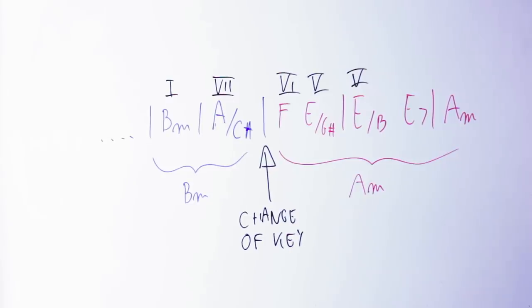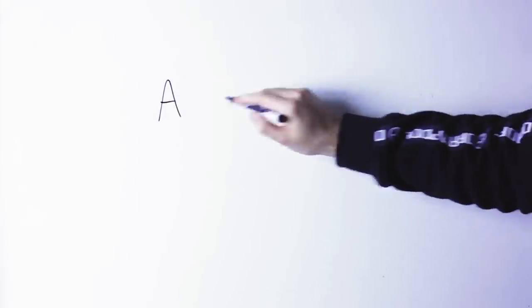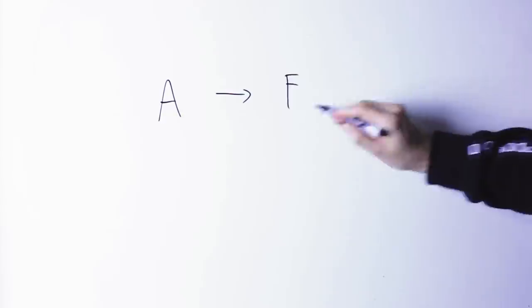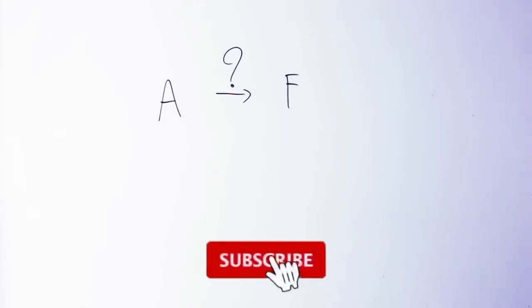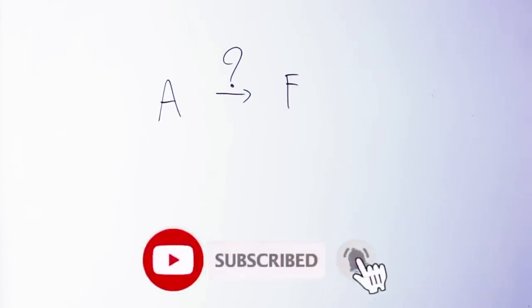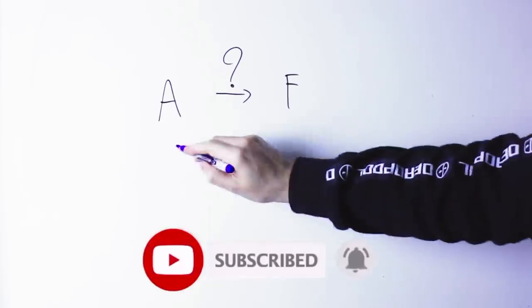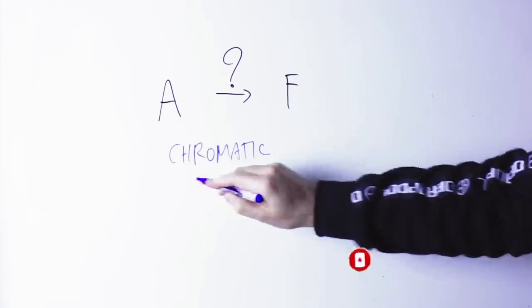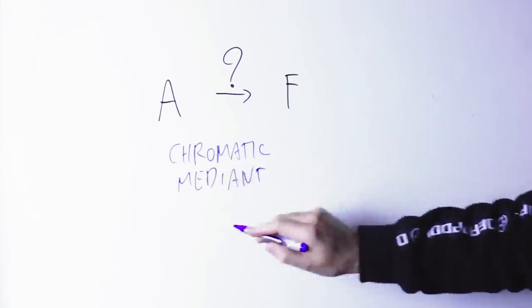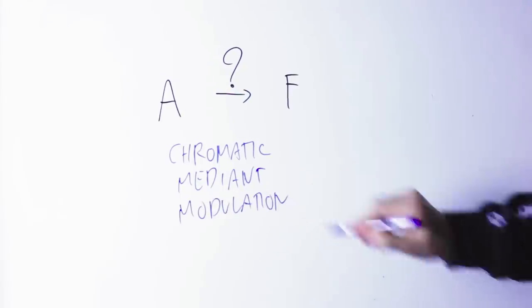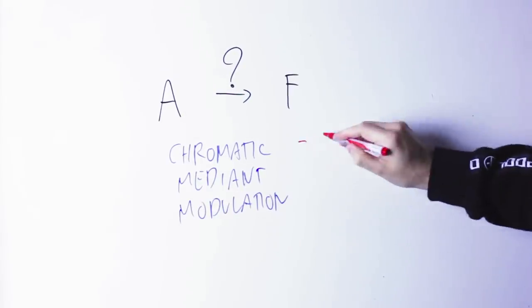So this movement between the A chord to the F chord is where most people get stuck. After all, what is the reason why going from the seventh chord in the key of B minor to the sixth chord in the key of A minor should sound so smooth? Well, the solution, in fact, is pretty easy, but it's not really explained in many books of music theory. This is simply what we called a chromatic mediant modulation.